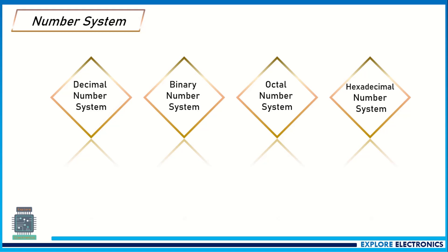Before going to the conversion, we have four different number systems. We have the decimal number system that we generally use in our day-to-day calculations. We have the binary number system, which is used by the computer — the computer understands binary. And also we have the octal number system and hexadecimal number system.